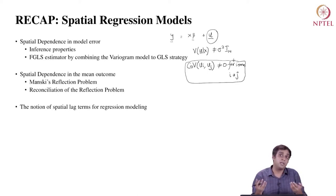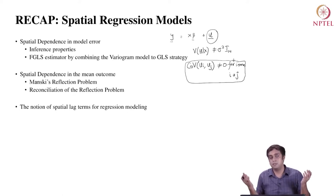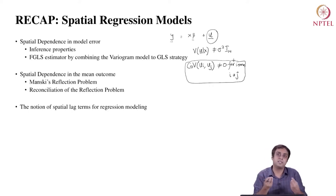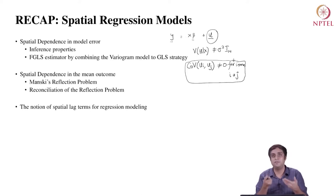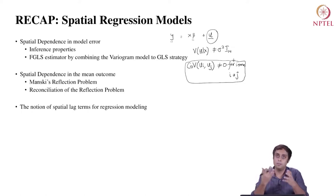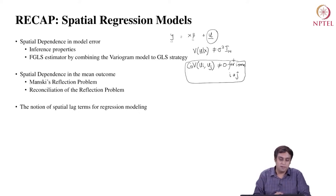We looked at inference properties — what happens to the regression estimator in this situation. The regression estimator will still be unbiased, but it will now be inefficient. We then introduced the FGLS estimator with the variogram model that we looked at in the previous portion of this course.